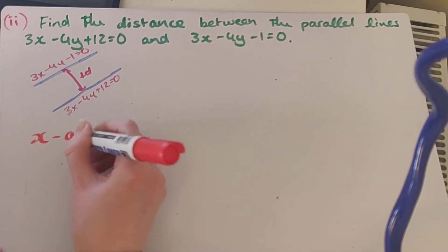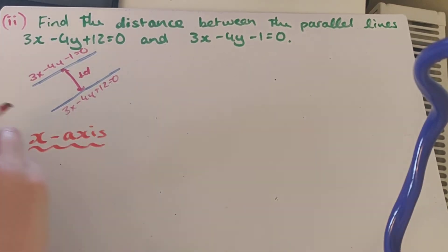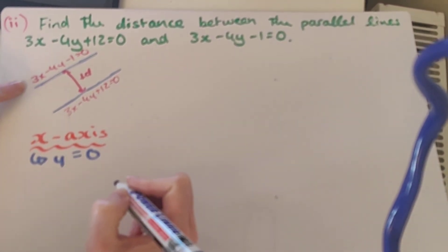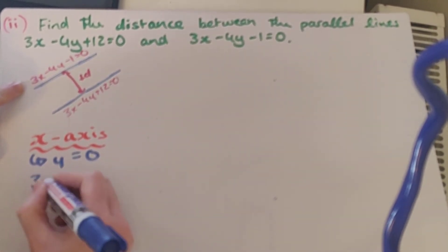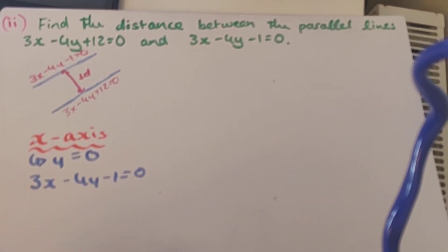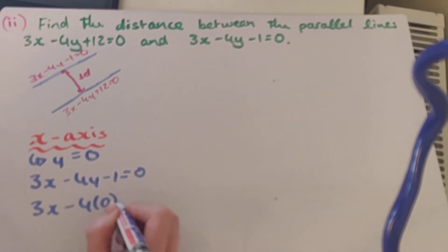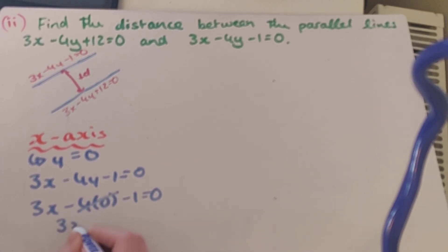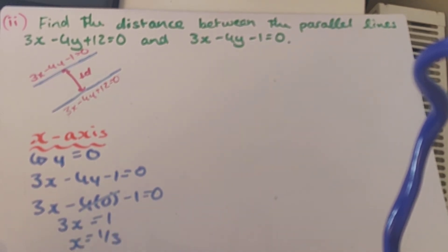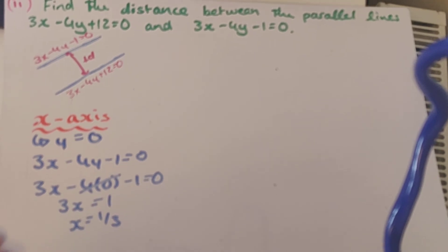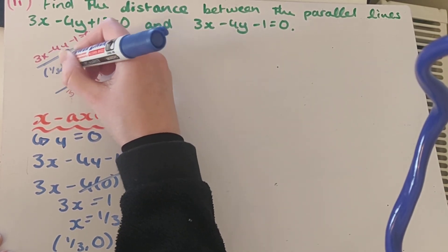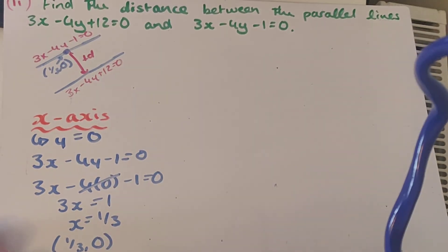I'm going to find where the line crosses the x-axis by letting y equal 0. I'll use the line 3x minus 4y minus 1 equals 0. Substituting y equals 0: 3x minus 4 times 0 minus 1 equals 0, so 3x equals 1, which gives x equals 1 over 3. So a coordinate on that line is (1/3, 0). That will be our x1, y1. Since I'm using the point from the second line, I must use the opposite line — 3x minus 4y plus 12 equals 0 — for a, b, and c. So a equals 3, b equals minus 4, and c equals 12.